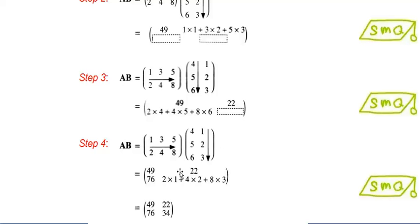For the last box, we multiply 2, 4 and 8 with the last column. Simplify the numbers and we will get 49, 22, 76 and 34.